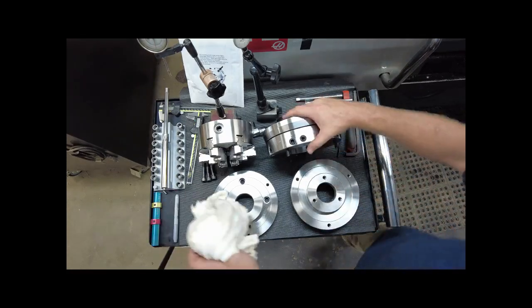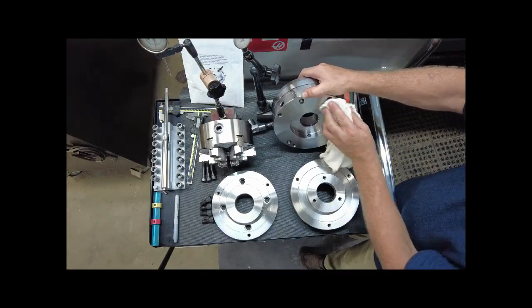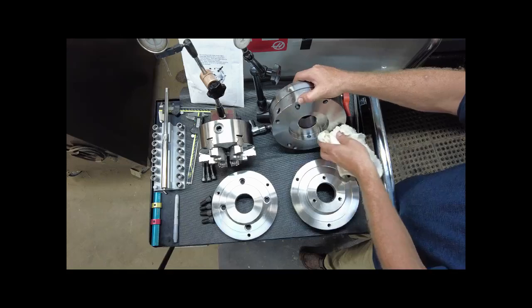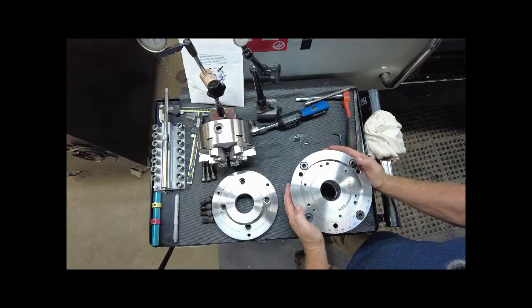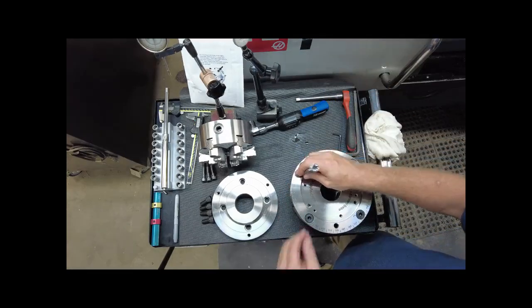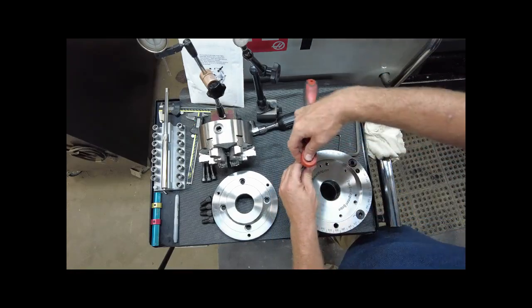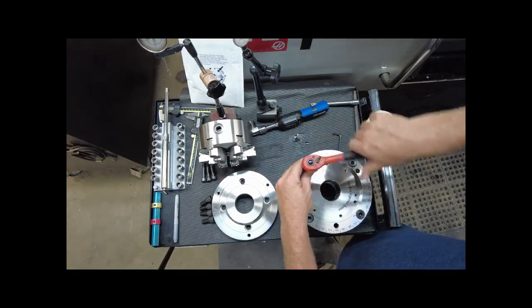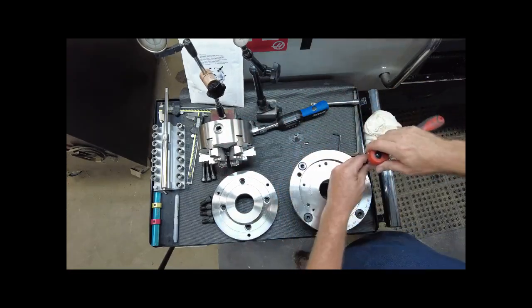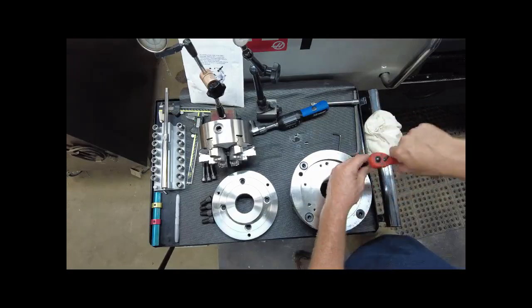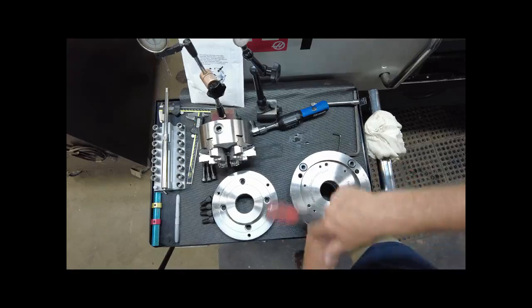The Truebore can be set back on the spindle adapter plate. Make sure the surfaces are clean where they come together. Tighten the three ten millimeter cap screws down in sequence until the spindle adapter and Truebore have been brought together.